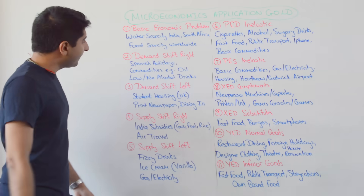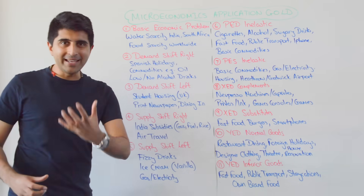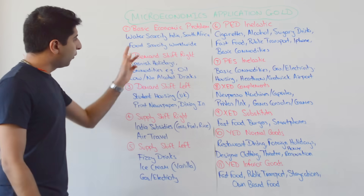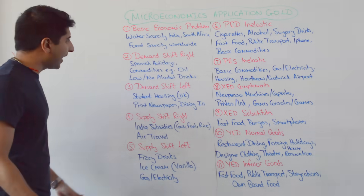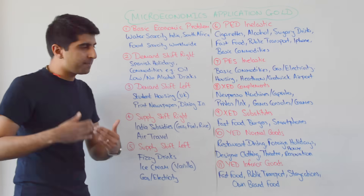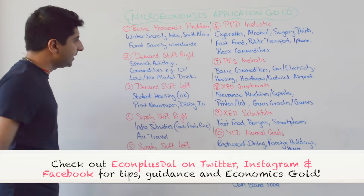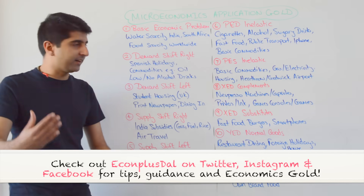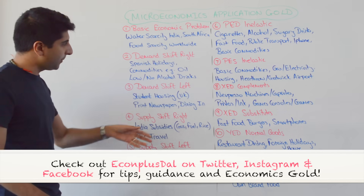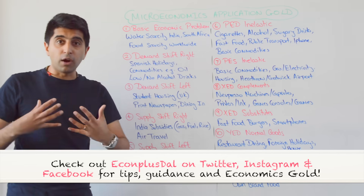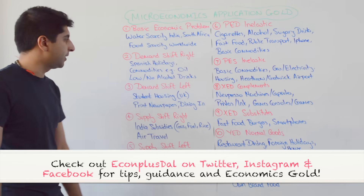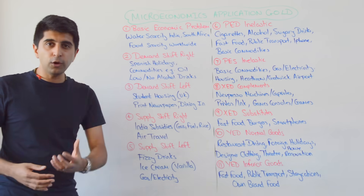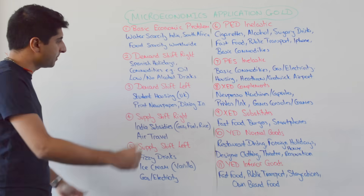Real-life examples of scarcity: water scarcity issues in India and in Cape Town, South Africa — drought-running countries here. Also look at food scarcity worldwide. We look at markets where demand is shifting right: demand for Spanish holidays in the UK has been increasing significantly. Also demand for key commodities like oil has been rising. Rising incomes in China are a key determinant there. Also in the UK, a change in fashion towards low or no alcoholic drinks is driving up demand.